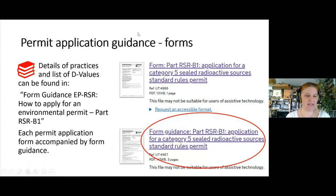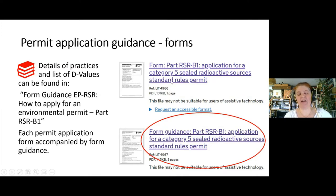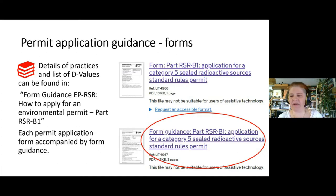As a handy hint, the list of practices that NACTSO uses and the list of D values can be found in the EPR form guidance — specifically 'How to apply for an environmental permit, Part RSR B1.' If you don't have access to the NACTSO handbook when applying, that gives you a pointer on what sources might be considered particular levels of source category. I also recommend that for any permit application, surrender, or variation, the forms issued by the EA all come with form guidance — most questions about the form can be answered there.